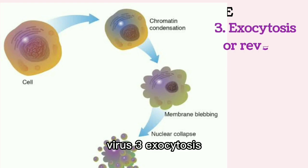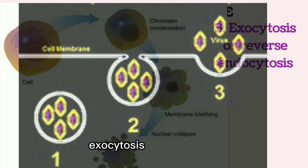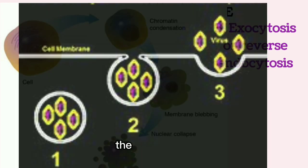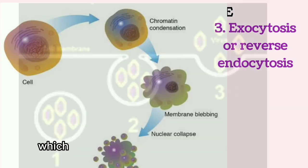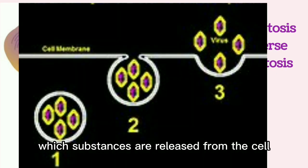3. Exocytosis, or reverse endocytosis: Exocytosis is the reverse process by which substances are released from the cell.